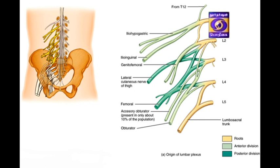In the third level, the obturator and femoral nerves have their root values. The sciatic nerve is also a key nerve in this region.